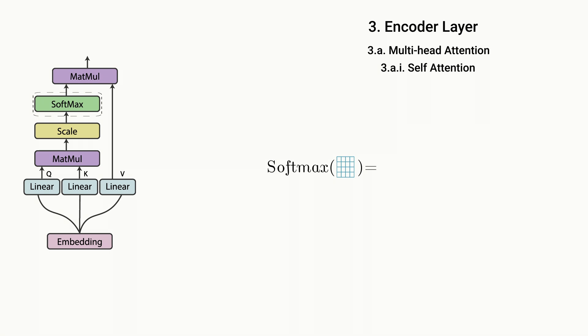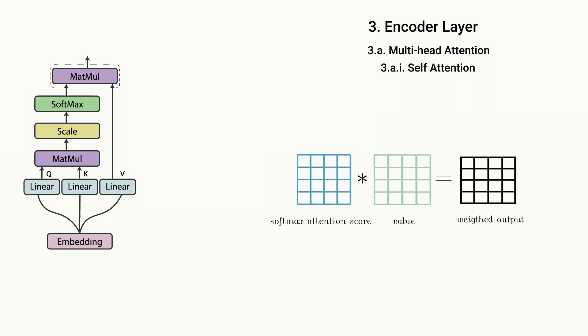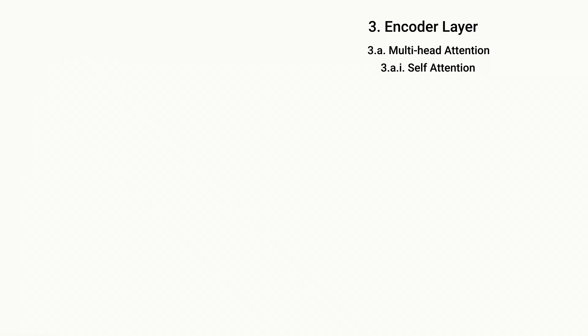Next, these scores are passed into a softmax layer, which returns probability values between zero and one. And finally, these softmax attention scores are used to multiply the value vector to produce a weighted output vector.